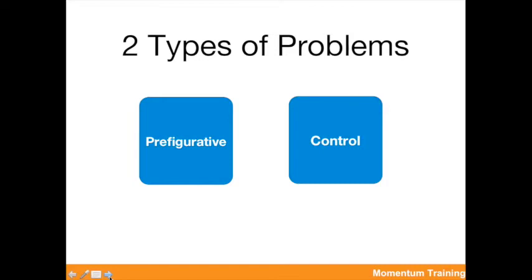When I was in the global justice movement, the labor movement, and the immigrant rights movement, I read a lot of history and realized that so many problems that happened in my movement had also happened in the civil rights movement and with Gandhi. The repetitive problems come from two different cognitive frameworks: what we call prefigurative and control. Those are the two major categories of problems that movements experience.